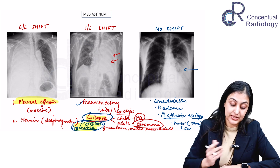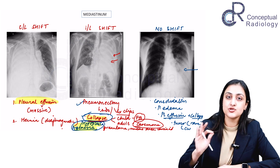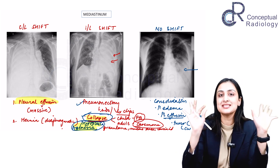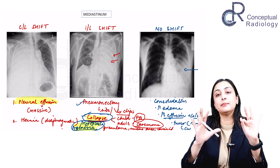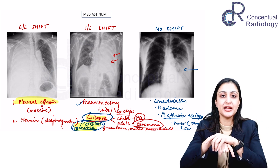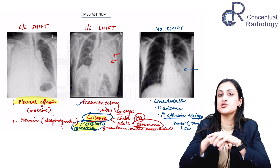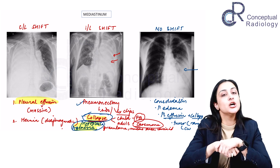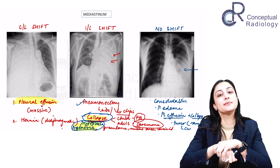In summary, this is the approach to a unilateral opaque hemithorax. All you have to do is look at the mediastinal shift and take it from there. It's a pretty systematic and straightforward case if you get this one.